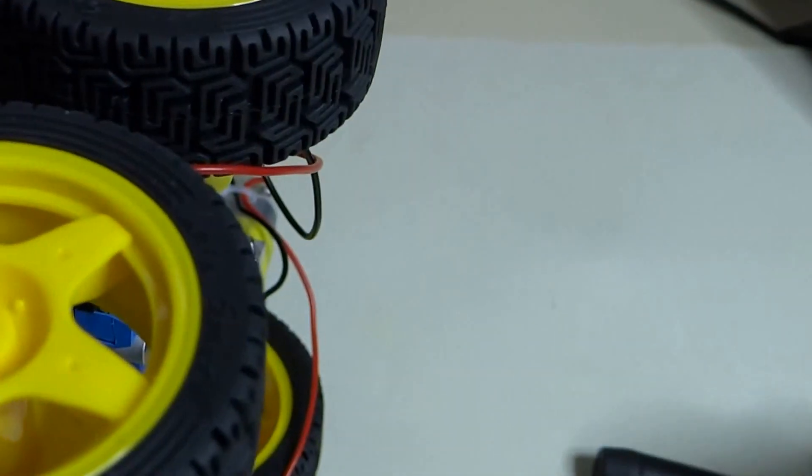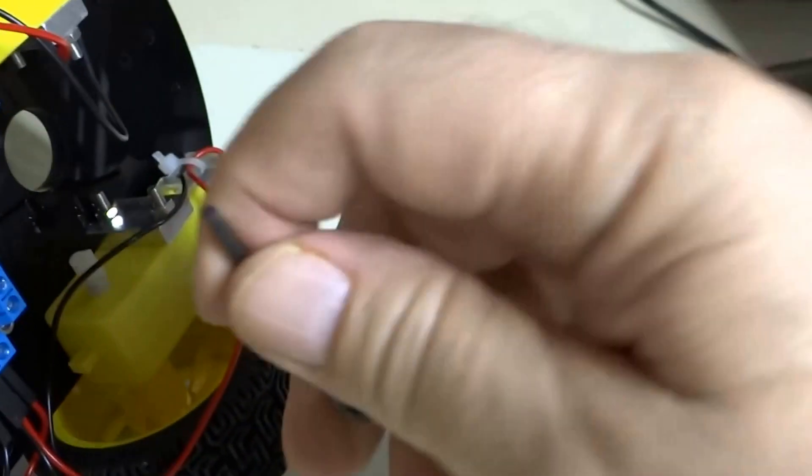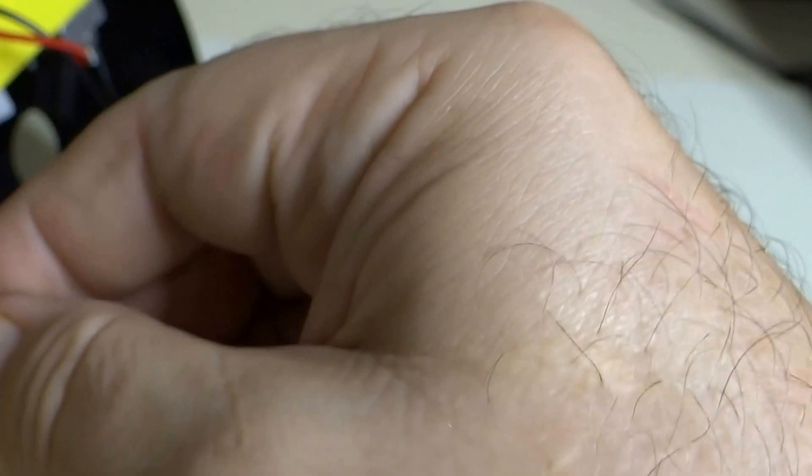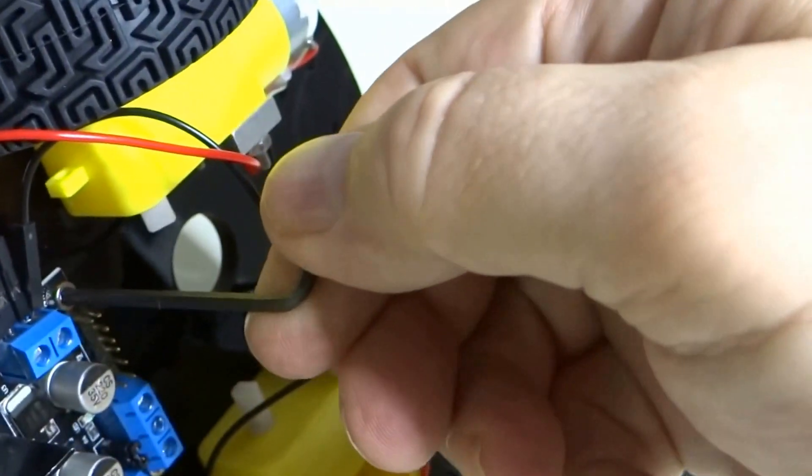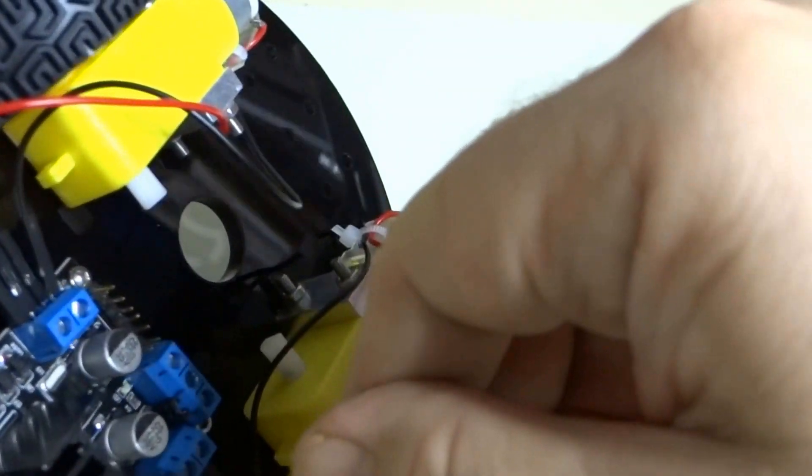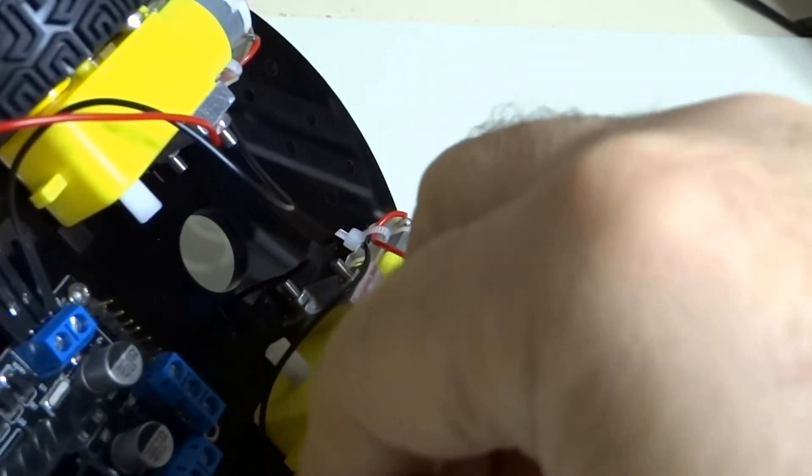Okay, so those are loose. Now we're just going to hand tighten them. Very delicate, like a feather. Don't want to break that circuit board. Just tighten it so it doesn't come out, doesn't fall off, doesn't go flying.